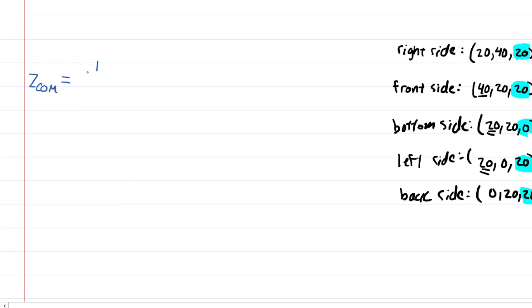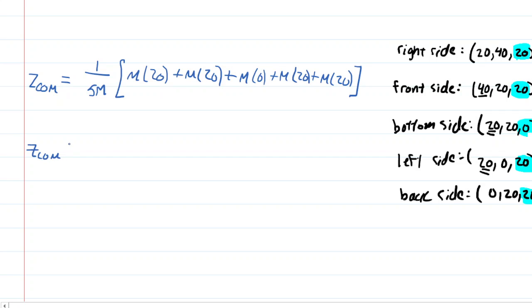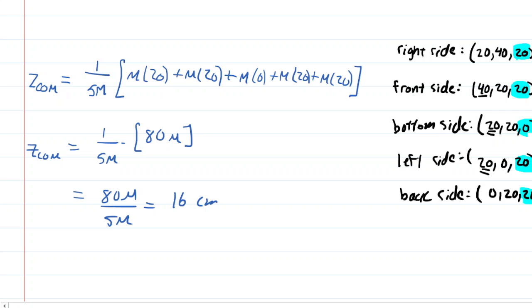Now we do the Z-coordinate. We have 1 over the total mass and look at the Z-coordinates. We have mass times 20 plus mass times 20, and continuing in that pattern. This time, when you simplify the contents of the brackets, you get 80m. So we have 80m divided by 5m. Canceling the m's and dividing 80 by 5 gives 16 centimeters — the Z-coordinate for the center of mass.